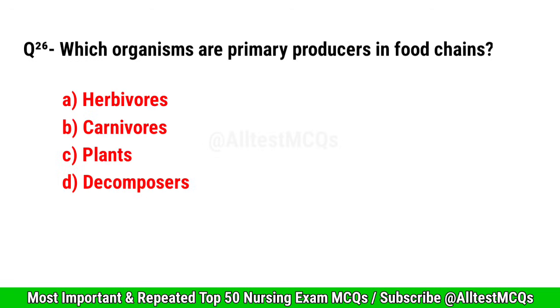Question No. 26. Which organisms are primary producers in a food chain? Right option is C. Plants.